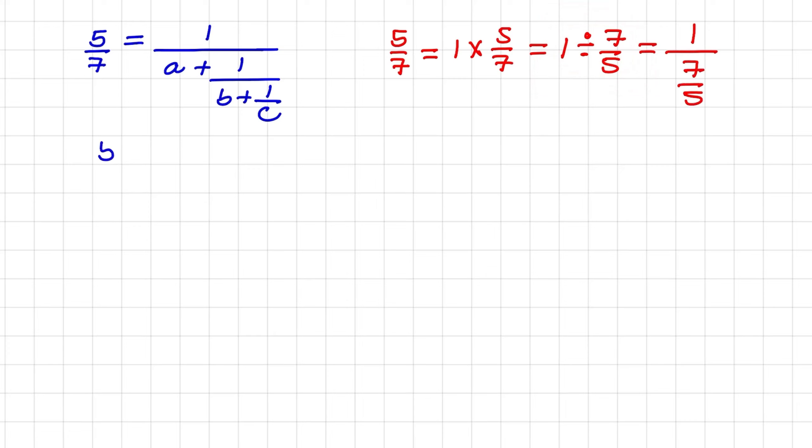So we have 5 over 7 is equal to 1 over 7 over 5. And now we notice we already have the 1 in the numerator, and that this part of the fraction is equal to 7 over 5. Now let us just focus on 7 over 5.